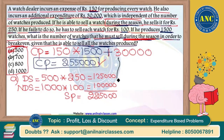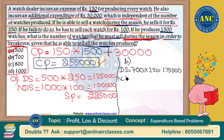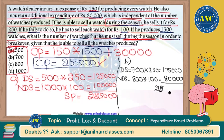Assume second option: 700 watches sold during season at 250 rupees each = 1,75,000 rupees. Remaining 800 sold off-season at 100 rupees each = 80,000 rupees. Total = 1,75,000 + 80,000 = 2,55,000 rupees. This equals the total cost price of 2,55,000 — break-even condition is satisfied. No profit, no loss.